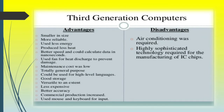Here are a few advantages of the third generation of computers. They were smaller in size — the first generation computers were very huge, literally consuming an entire room and generating a lot of heat. Comparatively, third generation computers are smaller in size. They are more reliable, use less energy, and produce less heat. They have better speed and could calculate data in nanoseconds. They used a fan for heat discharge to prevent damage. Maintenance cost was very low, and they were general purpose systems that could be used for high level languages.